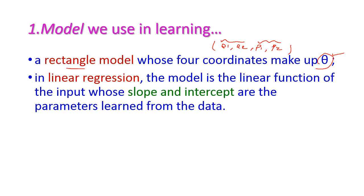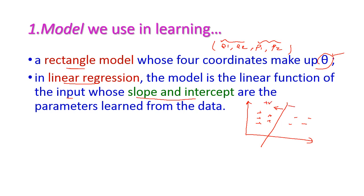In the rectangle model we use four coordinates as theta: e1, e2, p1, p2 — where the engine power range is e1 to e2 and the price range is p1 to p2. In linear regression, the model is a linear function of input whose slope and intercept are the parameters learned from the data, creating a line that separates positive samples from negative samples.